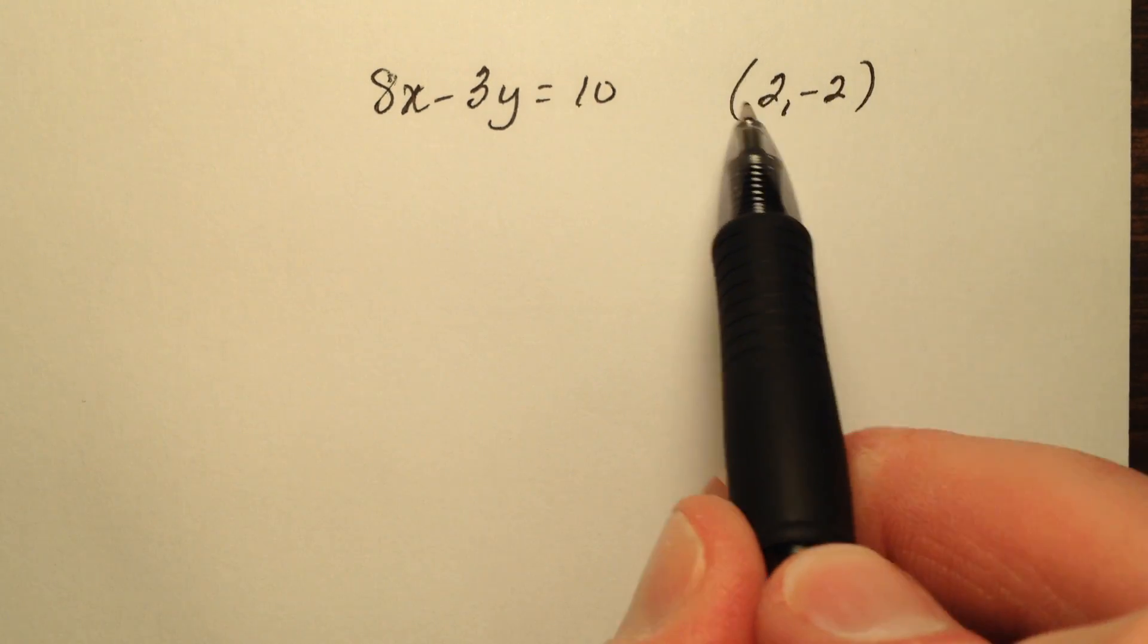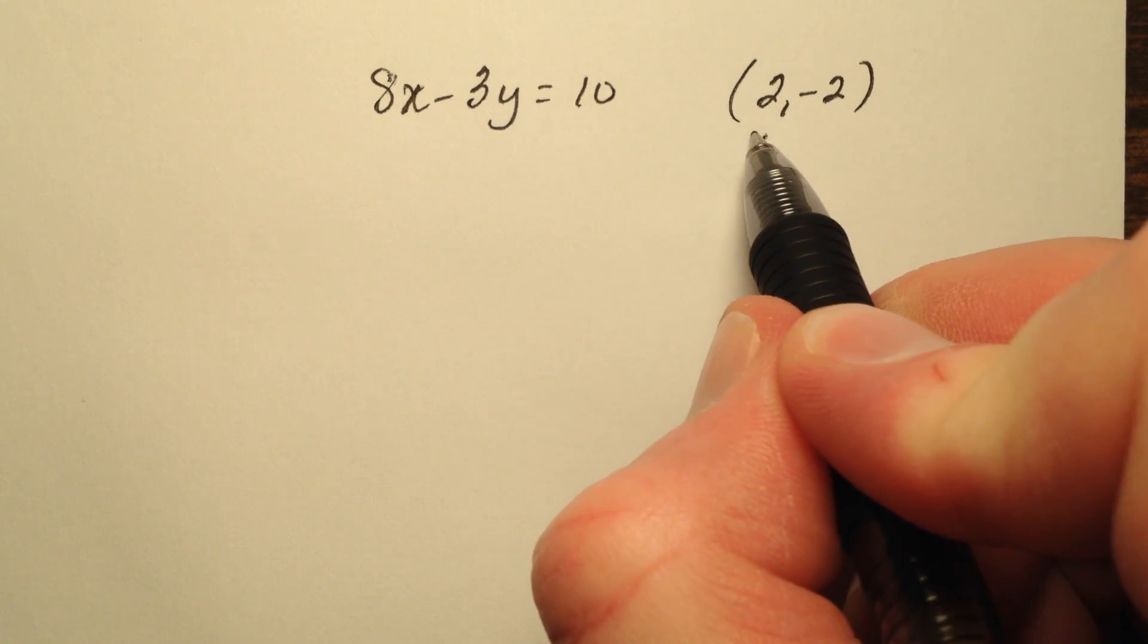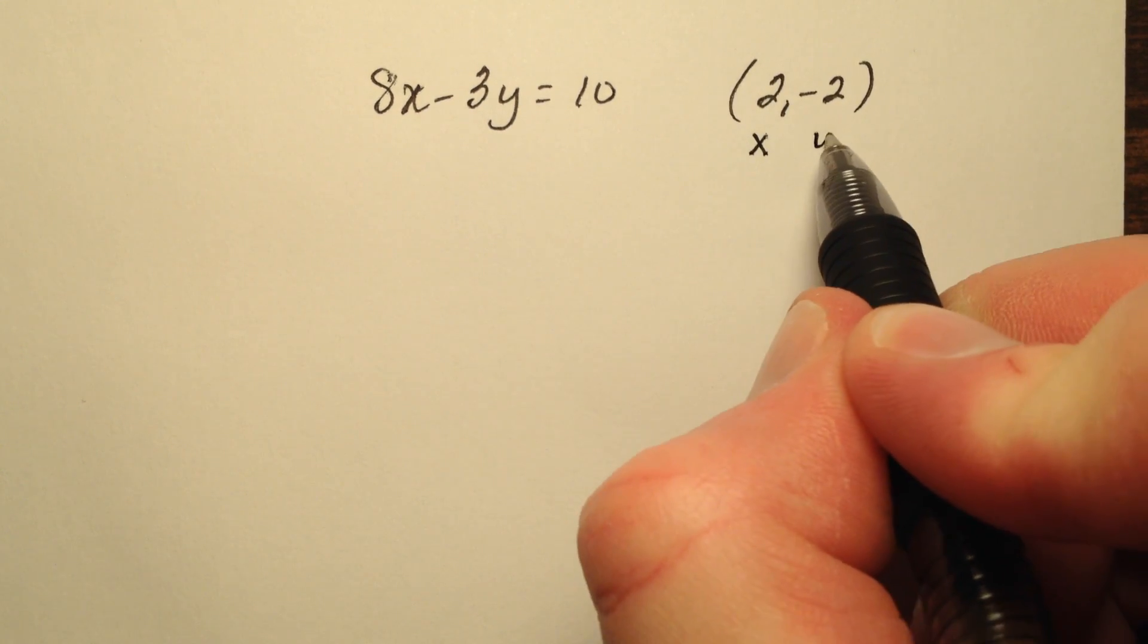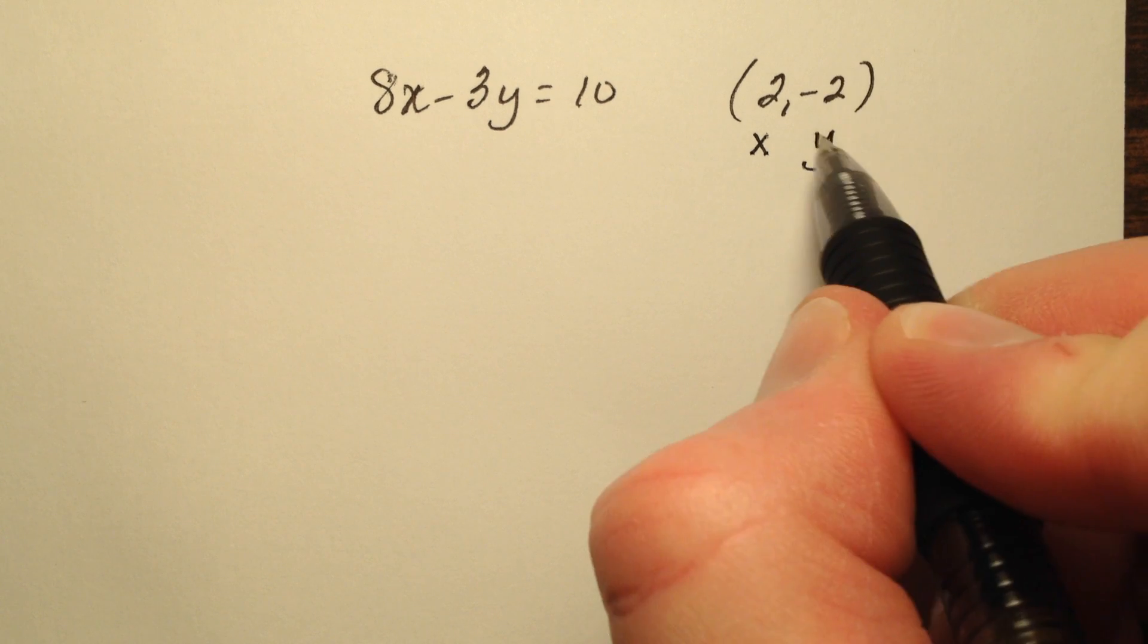So the first thing I notice in this ordered pair is I have an x coordinate or an x value and a y coordinate or a y value.